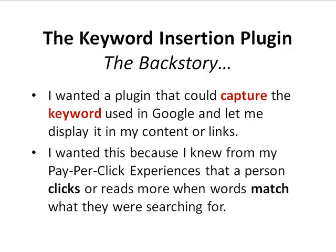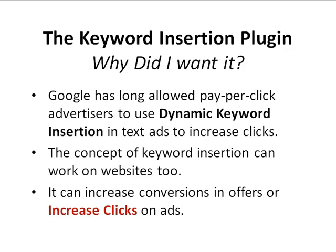The reason I wanted this is because I knew from my past experiences in pay-per-click marketing that when ad text matches or closely matches the keyword a person searches for, it gets clicked on more often. Google has long allowed a service within their pay-per-click program, Google AdWords, known as dynamic keyword insertion. It works by allowing advertisers to dynamically insert the actual keywords a visitor types into an ad instead of creating ads from scratch — and those ads get clicked on at a far higher ratio than other ads.